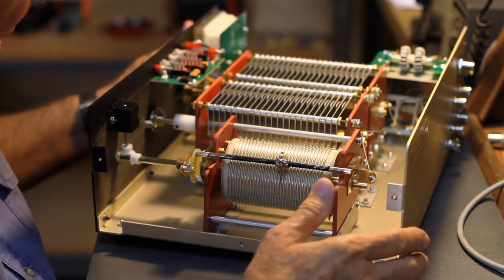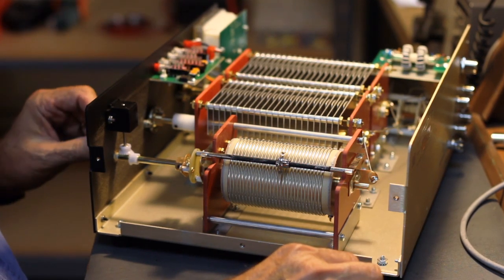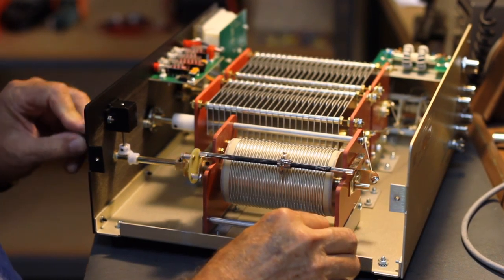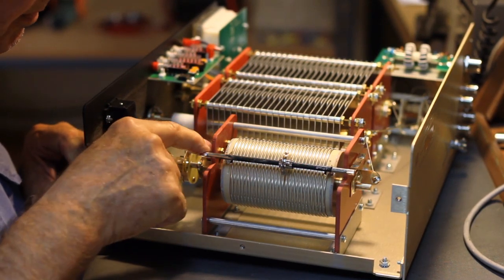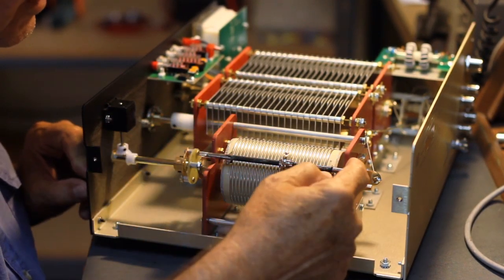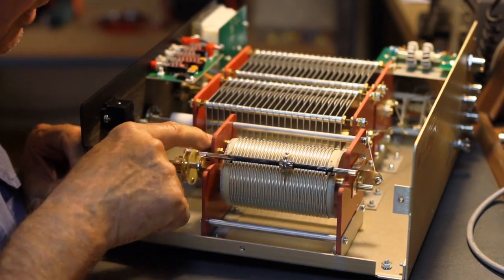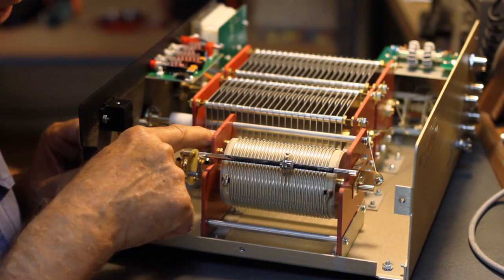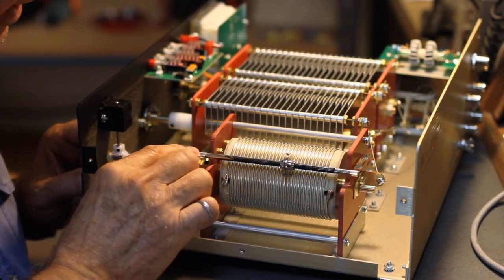So I want to show you the roller inductor. These flat pieces on the end, where the shaft that the wheel rides on is soldered, these flat pieces are actually phosphor bronze on both sides, and the shaft is soldered to the ends.